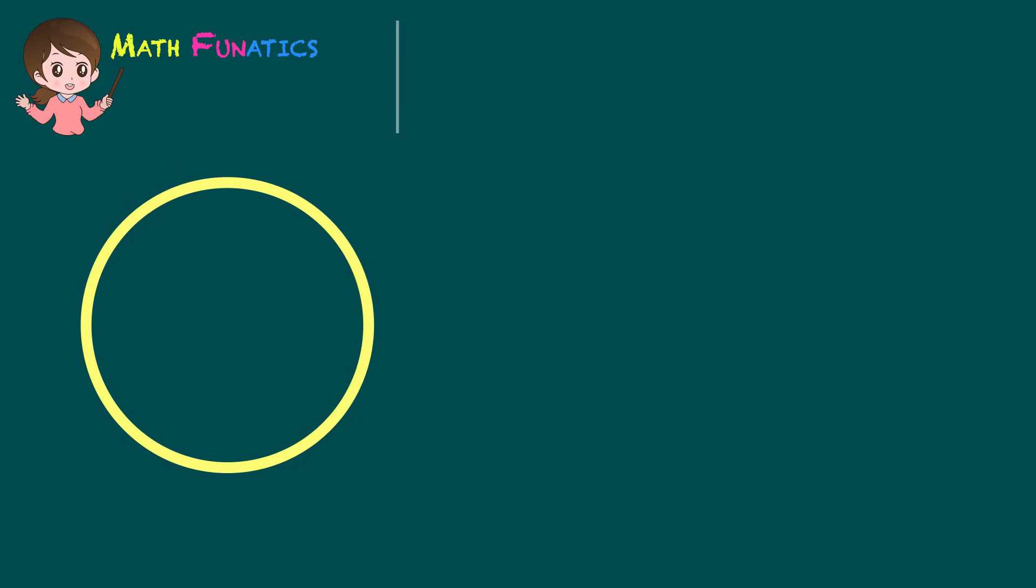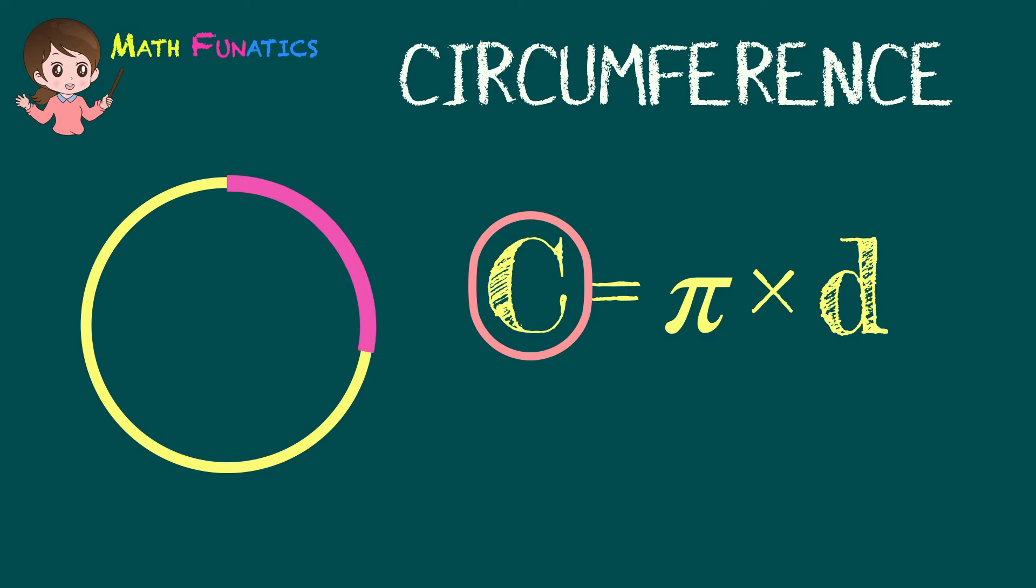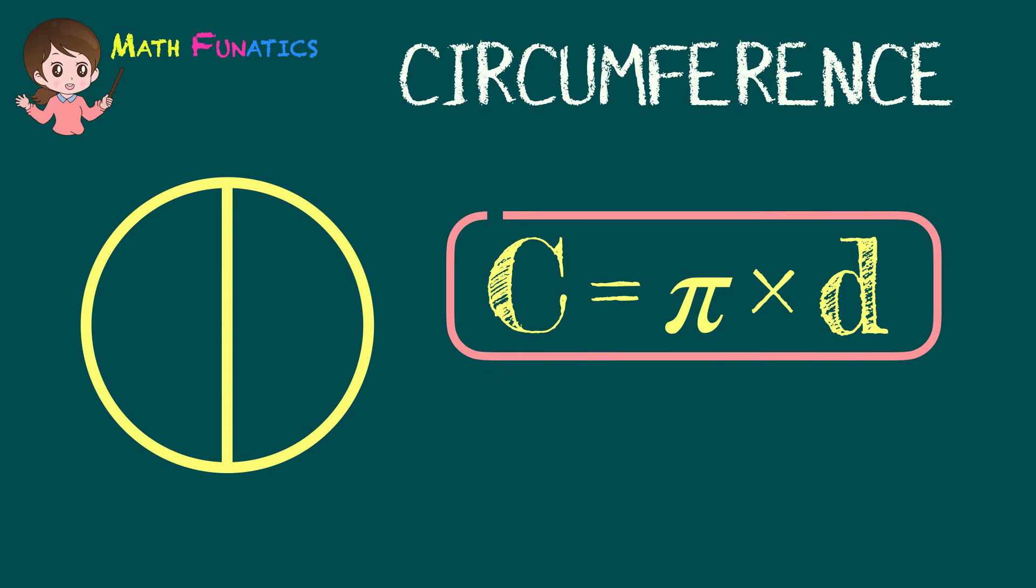To solve for the circumference of a circle, we use the formula C equals pi times D, where C stands for the circumference of a circle, pi which has an approximate value of 3.14, and D which stands for the diameter of the circle. Again, take note that the formula we will use to solve the circumference given the diameter of a circle is C equals pi times D.